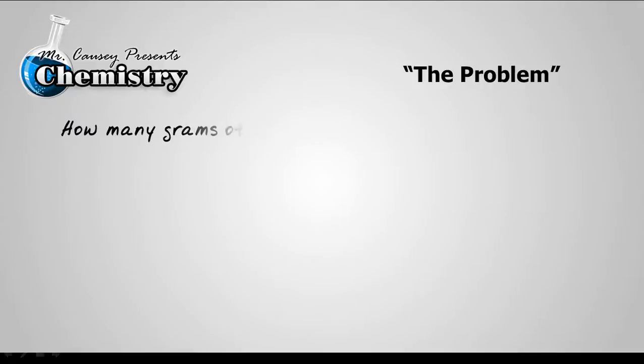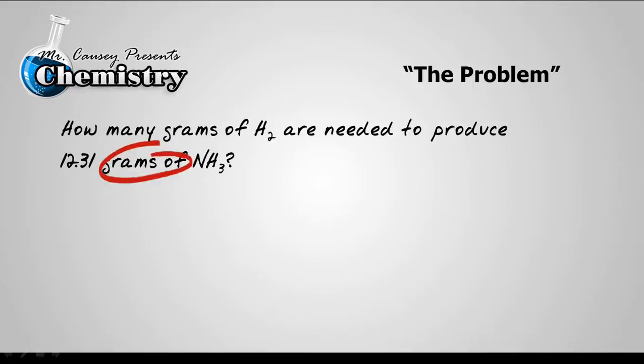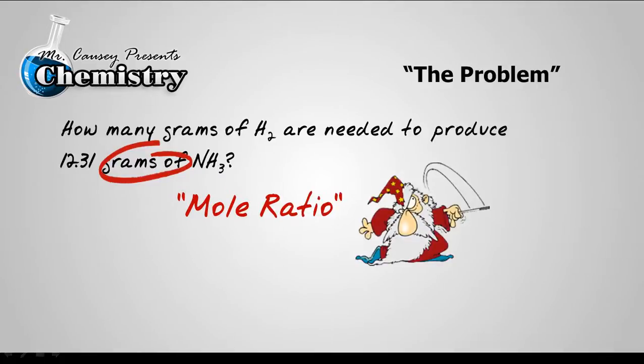Alright, let's get started. The problem, how many grams of hydrogen are needed to produce 12.31 grams of ammonia? Now our first problem here is realizing that we have grams and in order to do the stoichiometry we're going to have to use moles and the mole ratio. And that mole ratio is like magic. It helps us to change from one substance to another.